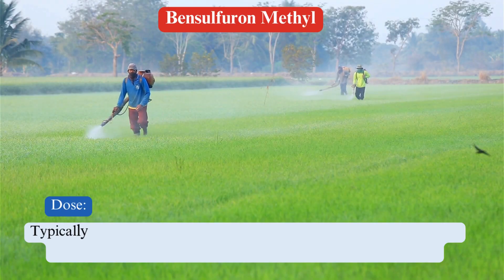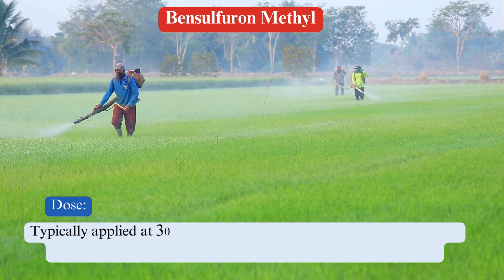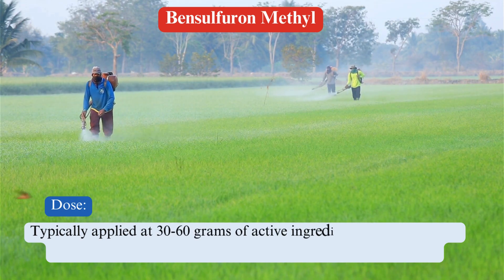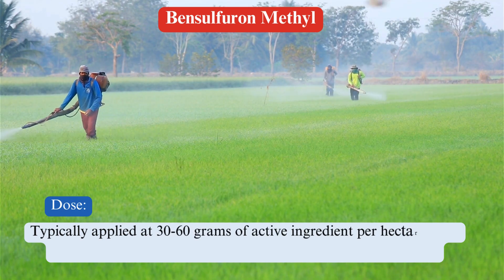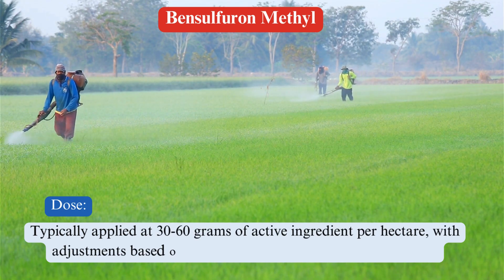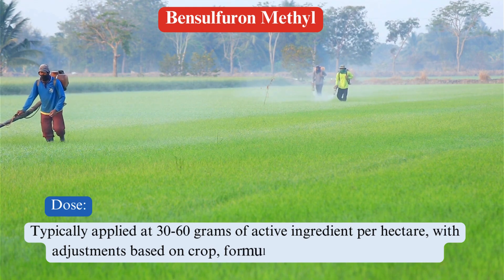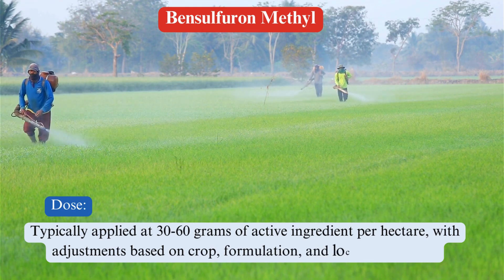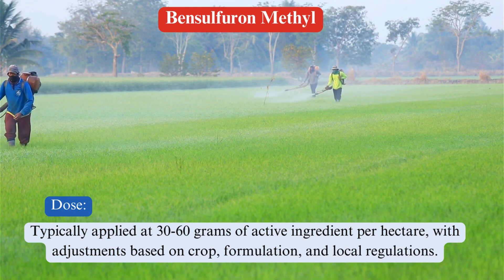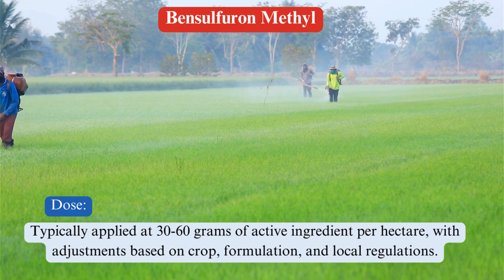Normal dose per hectare. Typically applied at 30–60 grams of active ingredient per hectare, with adjustments based on crop, formulation, and local regulations.